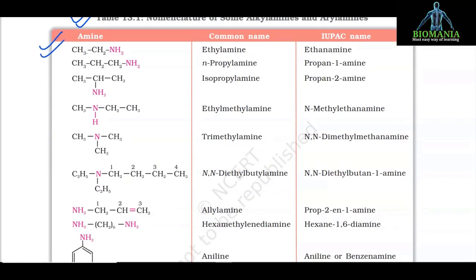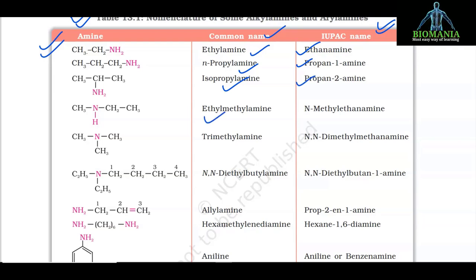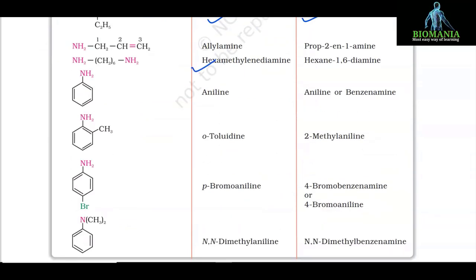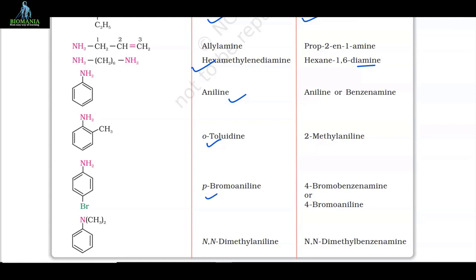From the table: ethylamine (ethanamine), N-propylamine, N-methylethanamine, N,N-diethylbutanamine (N,N-diethylbutan-1-amine), allylamine (prop-2-en-1-amine), hexamethylenediamine (hexane-1,6-diamine), aniline (aniline or benzenamine), o-toluidine (2-methylaniline), p-bromoaniline (4-bromobenzenamine or 4-bromoaniline), N,N-dimethylaniline (N,N-dimethylbenzenamine).